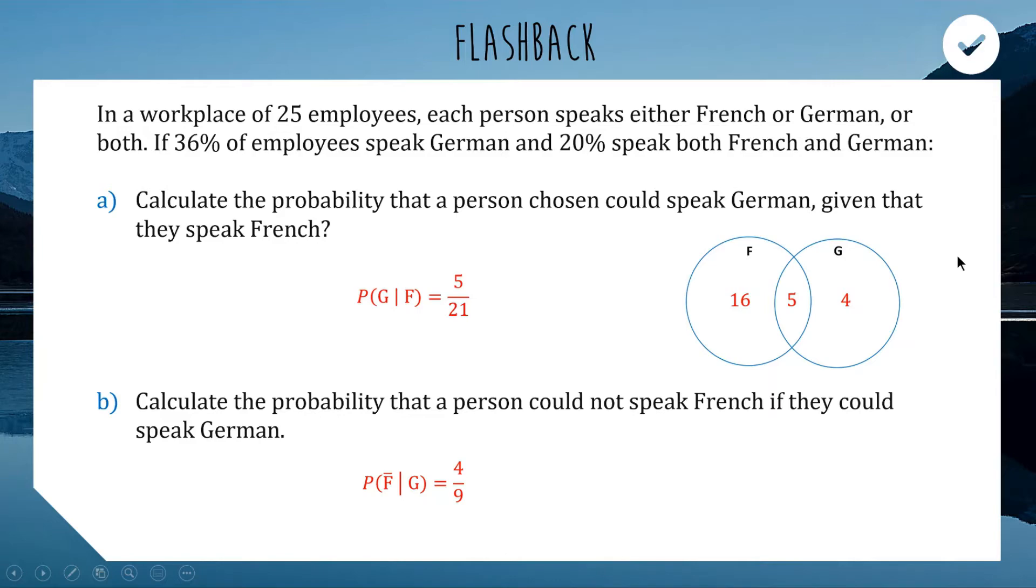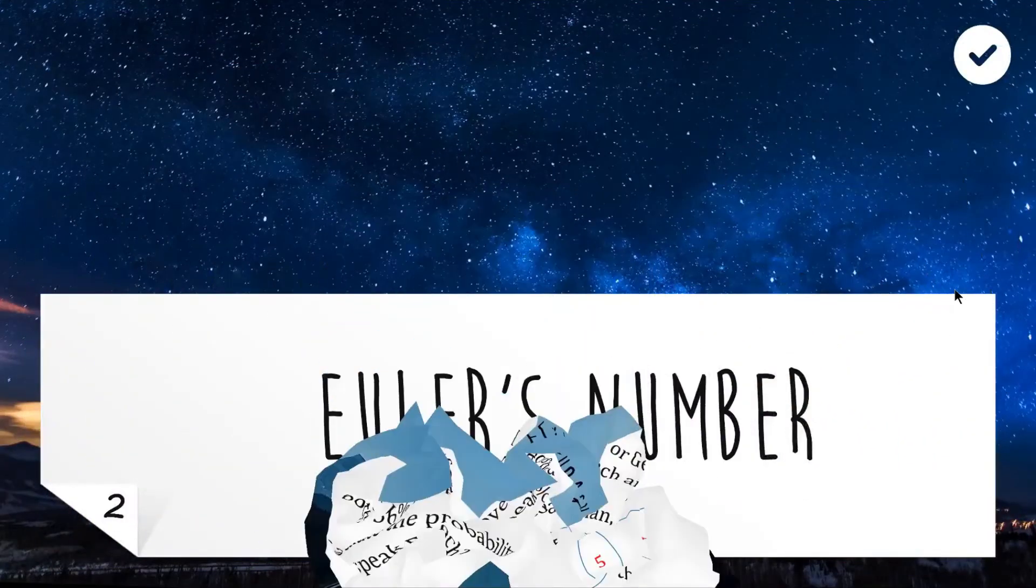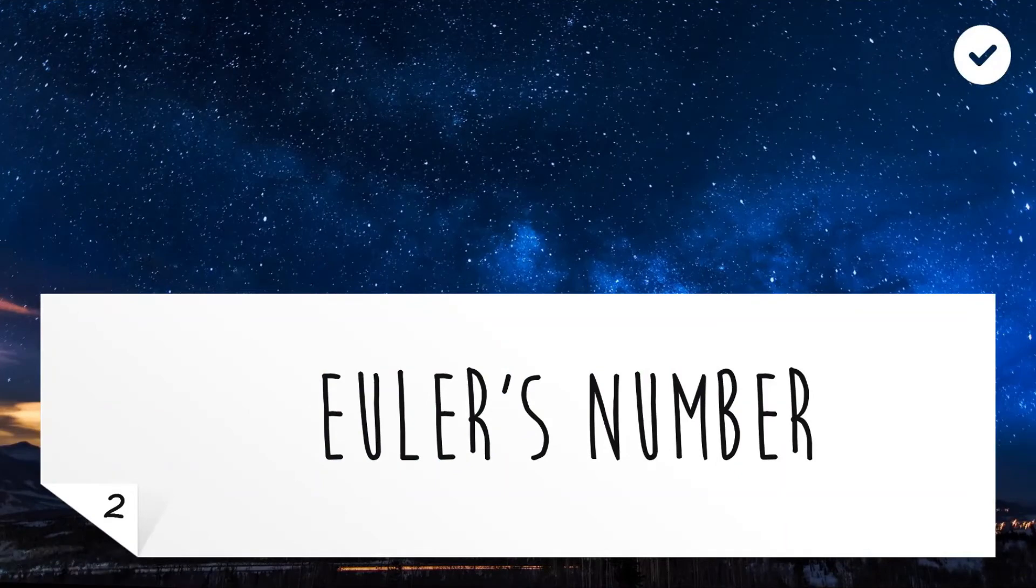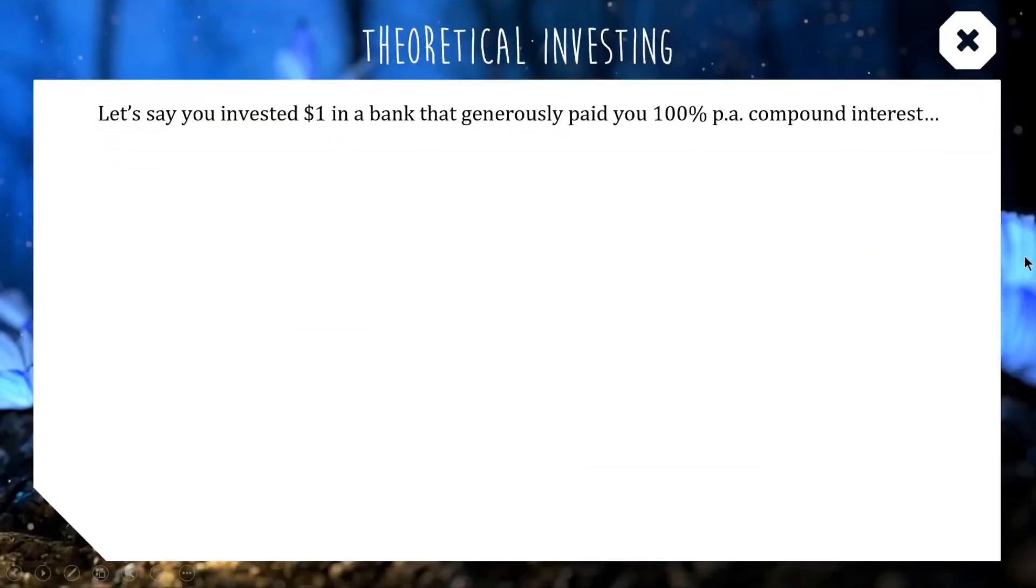All right, today we're doing something that you probably haven't done since primary school. We are learning a new number. Today's lesson is on Euler's number. A lot of people want to pronounce this name as Euler. It's actually pronounced Euler. So, he was a really famous mathematician from back in the day. He discovered very significant parts of the mathematical world. He's a big deal is what I'm trying to say.